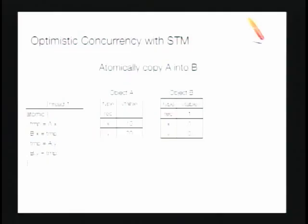Suppose we have a transaction that copies A into B. We use an atomic statement to declare this a transaction and copy fields X and Y from A to B. Under the hood, it's up to the compiler to figure out that it needs to do STM operations. In Java, a load is not just a load — you also check null, type safety, and so on. We modify that to also inform the STM: for A.x or B.x, it does bookkeeping to the STM data structures.